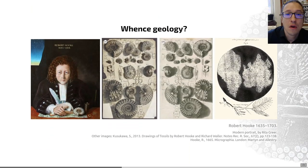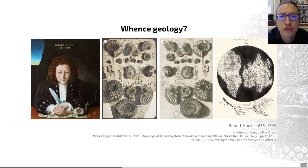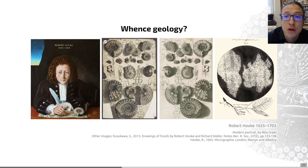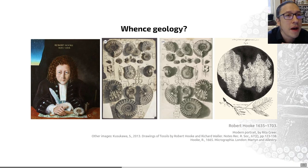One of the earliest big players was a gentleman called Robert Hooke, shown in a modern portrait on the left-hand side of this slide. This man was English, he was a natural philosopher, and he was a polymath, meaning he did lots of different things.